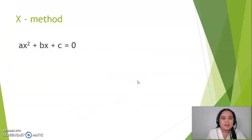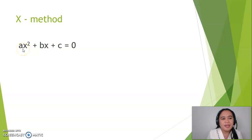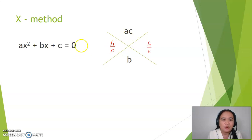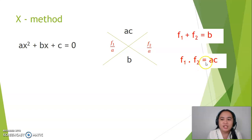To do this, let's use the X method. In the X method, the quadratic equation should be written in the standard form: ax squared plus bx plus c equals zero. Writing this in the X pattern, at the upper part should be the product of a and c, and at the lower part should be the value for b. At the sides should be the factors f1 and f2, written in the form f1 over a and f2 over a. Take note: when f1 and f2 are added, it should equal b, and when they are multiplied, it should equal ac. So basically, f1 and f2 are factors of ac.